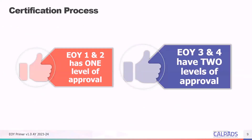The certification process does differ depending on the end-of-year data collection in question. Certain EOY collections require both LEA and SELPA approval, and others require only LEA approval to certify. EOY 1 and EOY 2 require only a single level of approval with LEA approval. EOY 3 and EOY 4 require two levels of approval — LEA approval and SELPA approval. This is due to the nature of EOY 3 and EOY 4 involving students with disabilities, as well as incident and absence data that SELPAs will need to review.